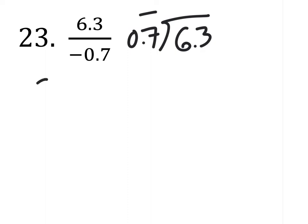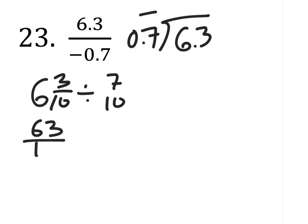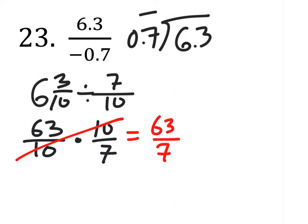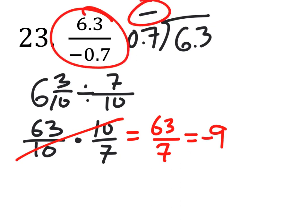Otherwise, you could do 6 and 3 tenths with the fractions divided by 7 tenths, like this. Converting the mixed number into an improper fraction would be 63 tenths. And would multiply, would flip those, it'd be 10 sevenths. Some of you guys know to cancel the tens out there, which would be 63 divided by 7, which some of you guys know to be 9. Now don't forget this is a negative, because there was one negative in this problem, so it's a negative 9.